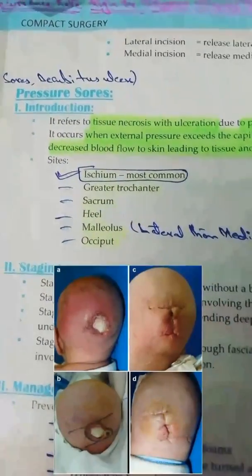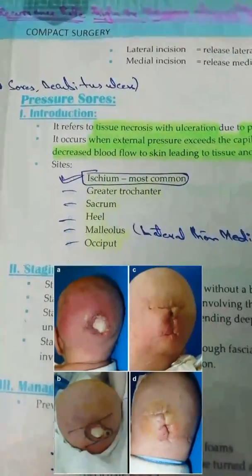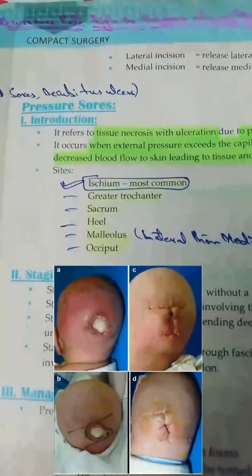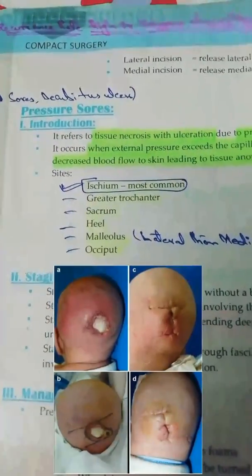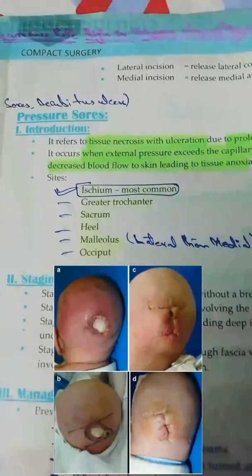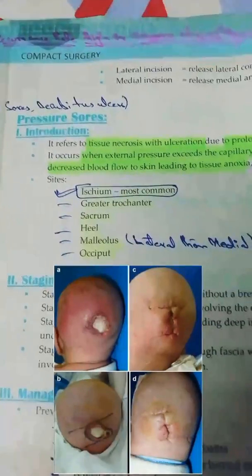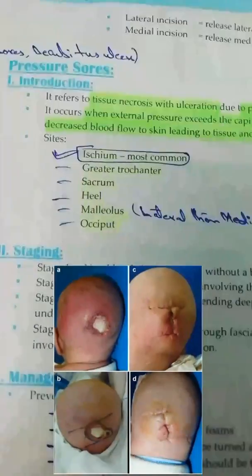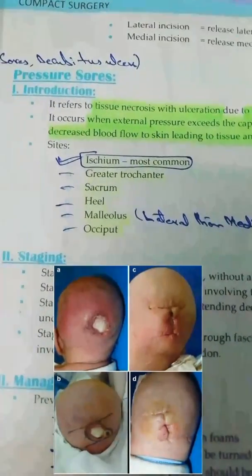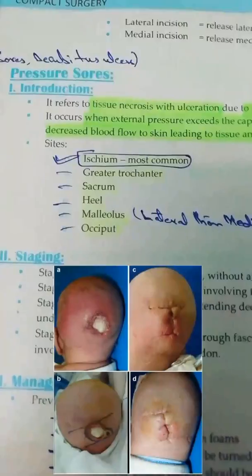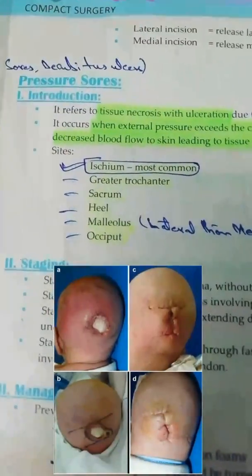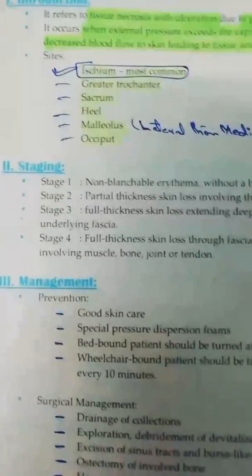The occiput is another common site, particularly in infants, because babies have a bigger head size compared to their body size. Due to prolonged bed rest, the pressure of their head is applied to the back of their head, and so they also develop pressure sores there.